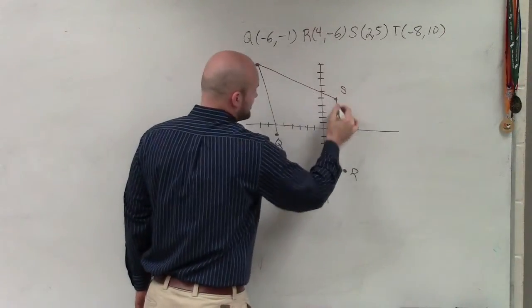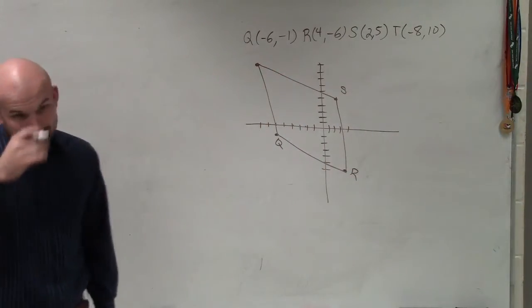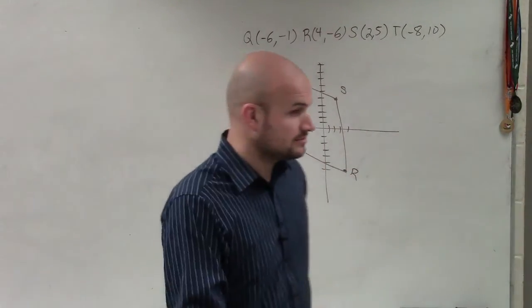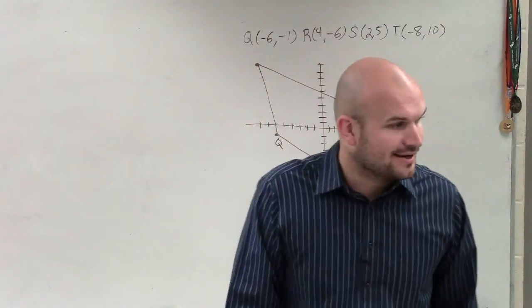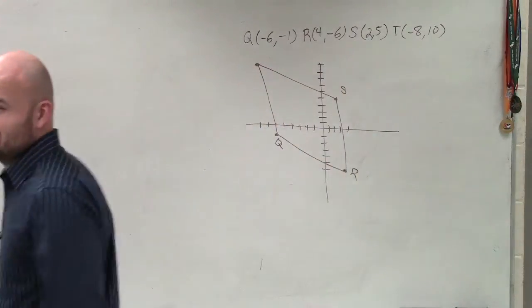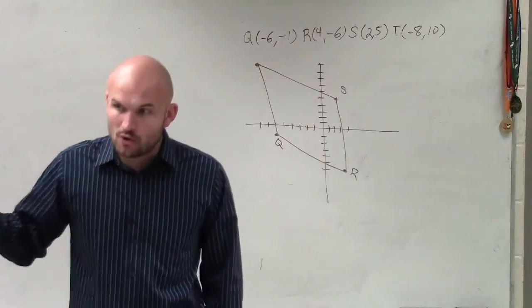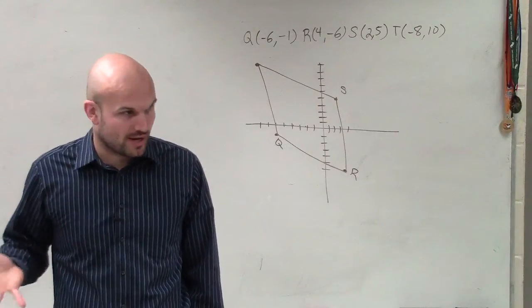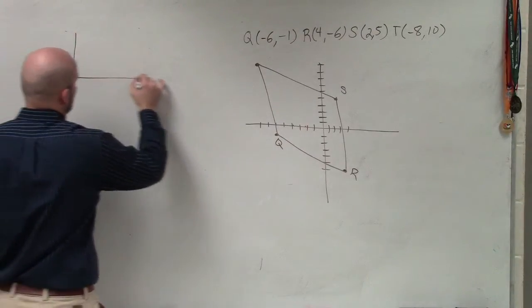Now, what this problem is asking us to do is determine if we have a rectangle, a square, or a rhombus. Now, I like to be a pretty simple guy. Does that look like a square? No. It doesn't even look like a rectangle. But we need to be able to show that it's not a rectangle or a square. So let me draw you a picture of a couple of them.